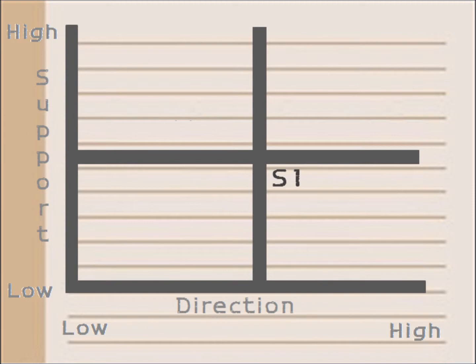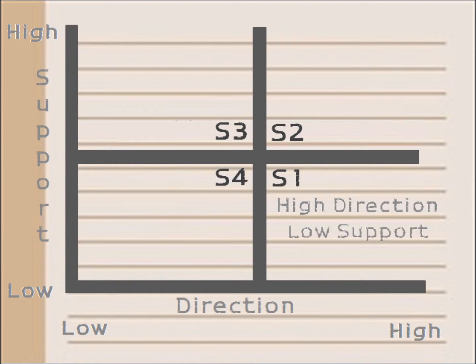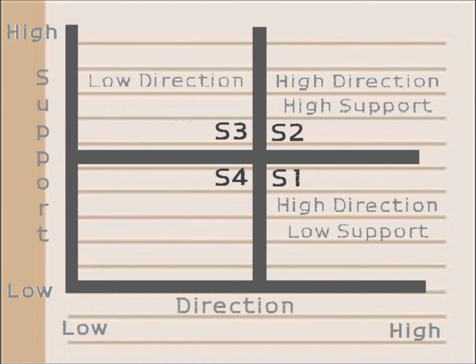It starts with S1, then S2, then S3, and finishes with S4. S1 is high in direction but low in support. S2 is high in direction and high in support. S3 is low in direction but high in support.